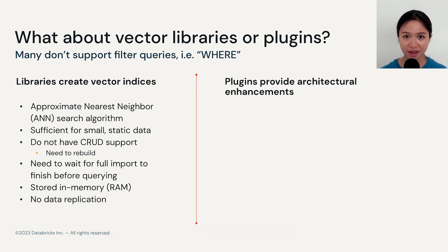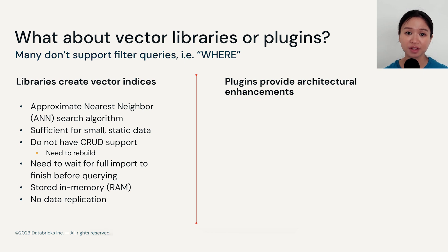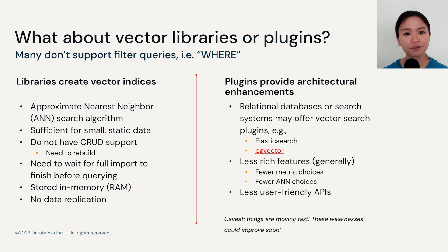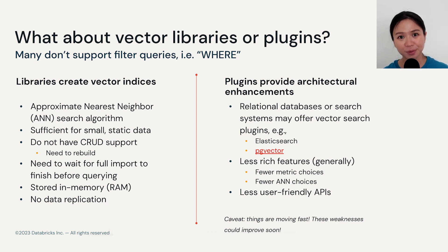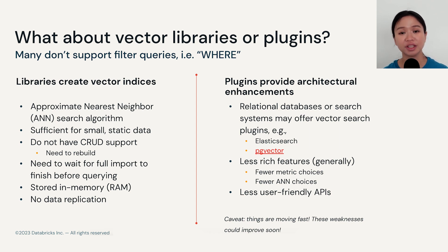On the other hand, there are also existing relational databases or search systems that provide vector search plugins. They typically have fewer metrics or ANN choices, but I wouldn't be surprised if you see a lot more vector search support for these plugins even in the coming months.